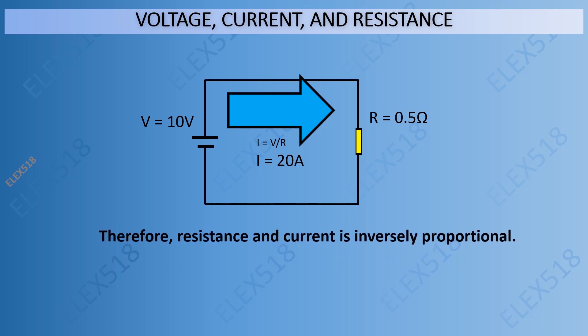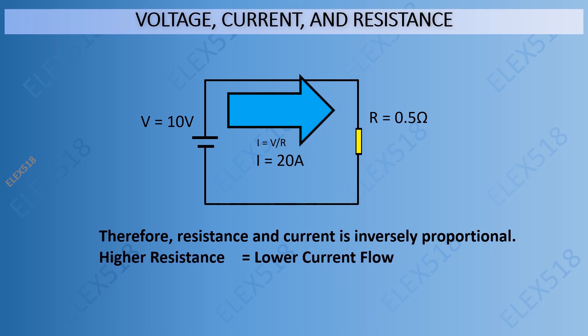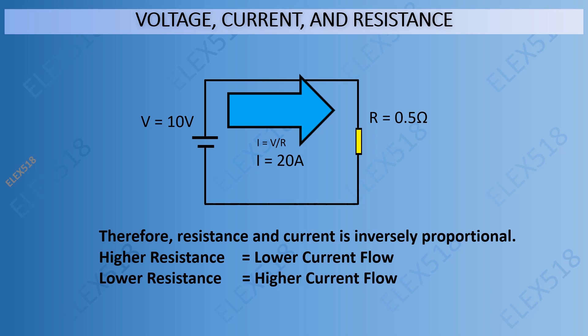Therefore, resistance and current are inversely proportional. Higher resistance will result in lower current flow, and lower resistance will result in higher current flow.